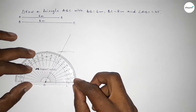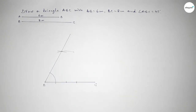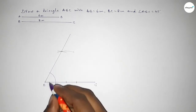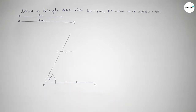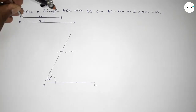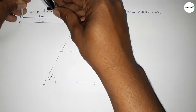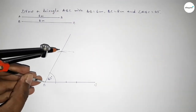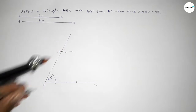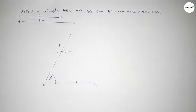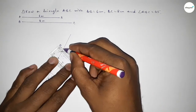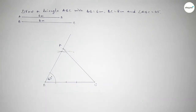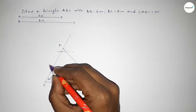Now joining this line to get a 65 degree angle. Checking — this is perfectly 65 degrees. Now taking the length AB equal to 6 centimeters using the compass, putting the compass here and cutting here, so taking point A.